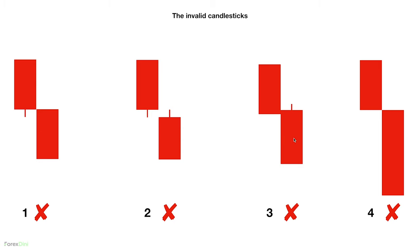In invalid example three, there are two problems: the second candlestick has not opened below the first large candlestick, and the wick of the second candlestick would have already hit the 20% take profit line. Make sure the second candlestick is below and its wick is not touching the take profit line. In invalid example four, the second candlestick is breaking golden rule number two — it's much bigger than the first candlestick. Make sure the second candlestick is always smaller than the first.